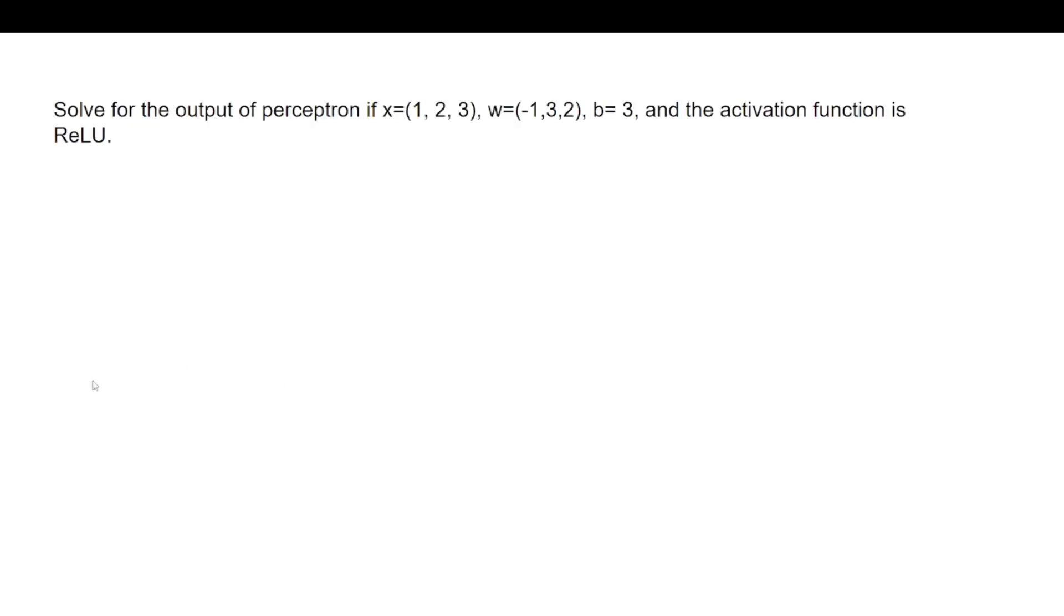Now I'll do an example problem of solving for the output of a perceptron to make sure you guys understand. So I would recommend you pause and try to solve this. And now that we're back, we can see that the answer is 14 by multiplying the dot product of these two vectors and then adding it by the bias.